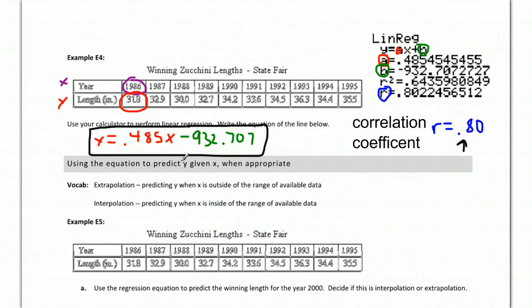And this tells you how good it's going to be. The closer to one this is, or the closer to negative one, the better it is. If it's close to zero, then it's not a very good line. So that is how you get it from your calculator.